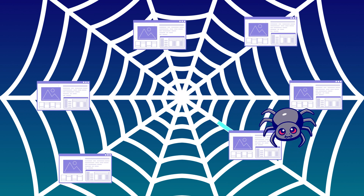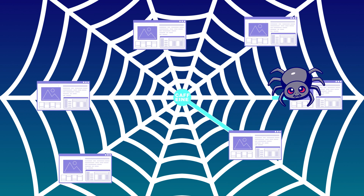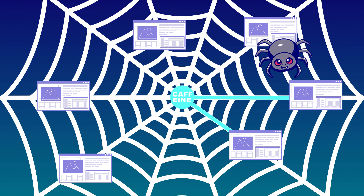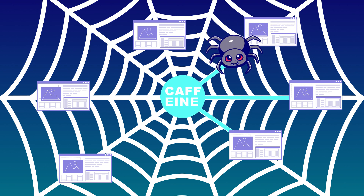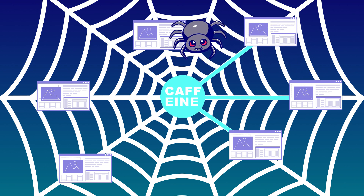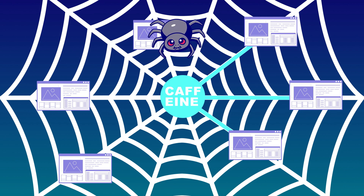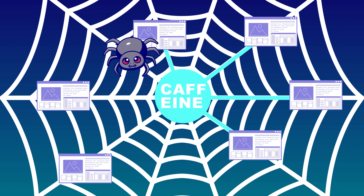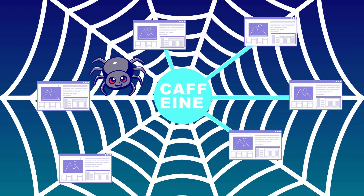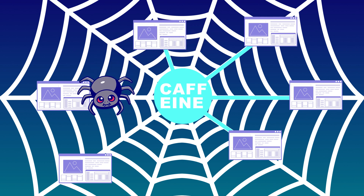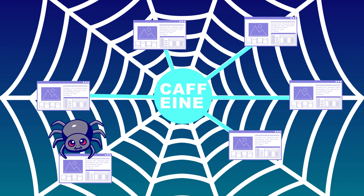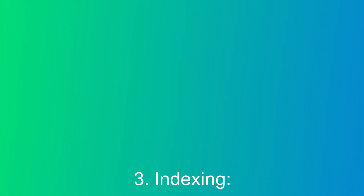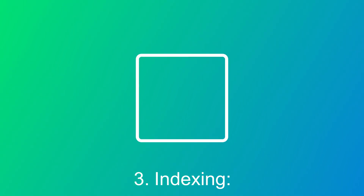Two, crawling. Google's bots usually crawl through websites link by link — it jumps from a page to another page hyperlinked on the previous page. These URLs are stored in a big database called Caffeine, which acts as the foundation for the index. Crawlers use the indexed links and then go to the hyperlinked pages, and the process goes on.